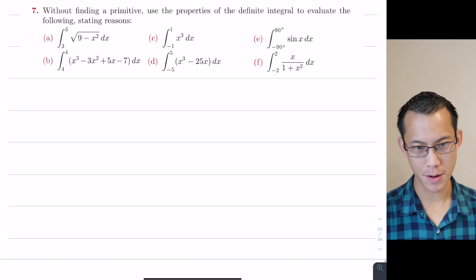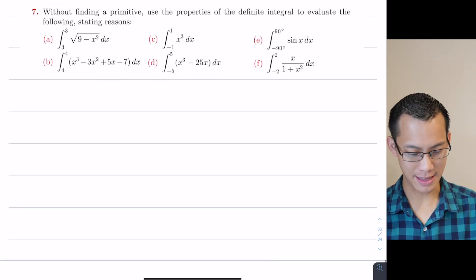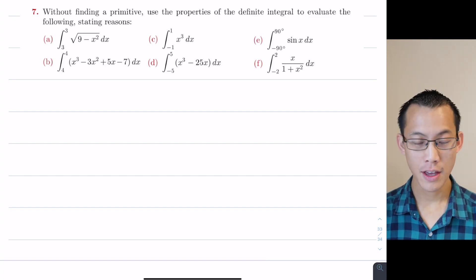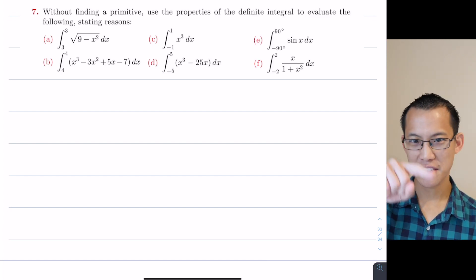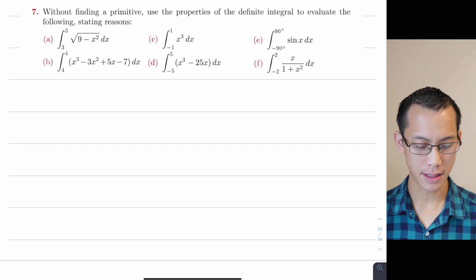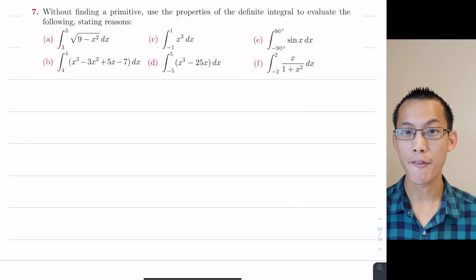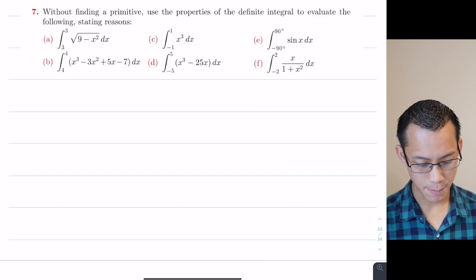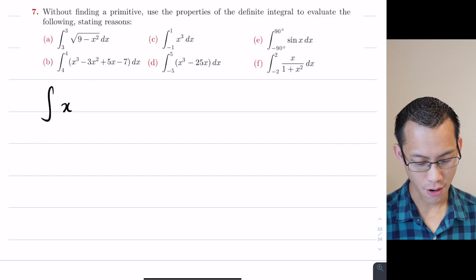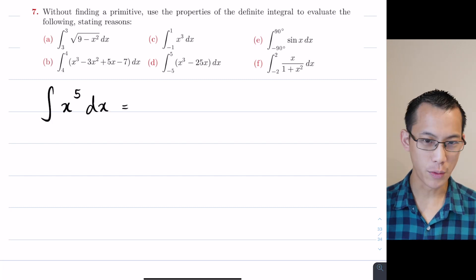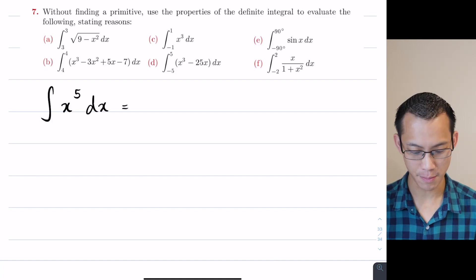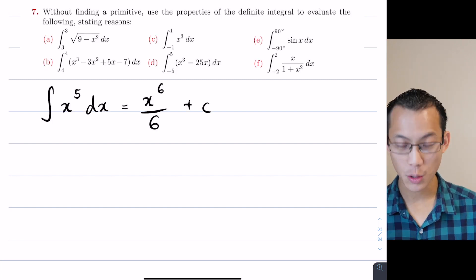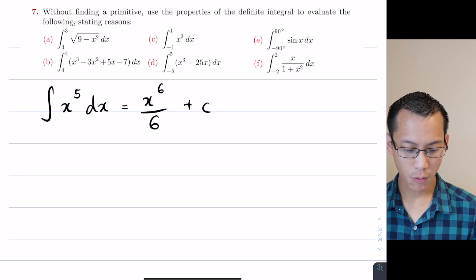What we're trying to do is find a definite integral without finding a primitive. When we differentiate a function we're finding a derivative using calculus — bring the index out front, multiply by the index and so on. With integrating we can find a primitive by reversing those rules: for example the integral of x to the power of 5, we increase the index, divide by the new index, then add a constant of integration. That gives us the primitive function.